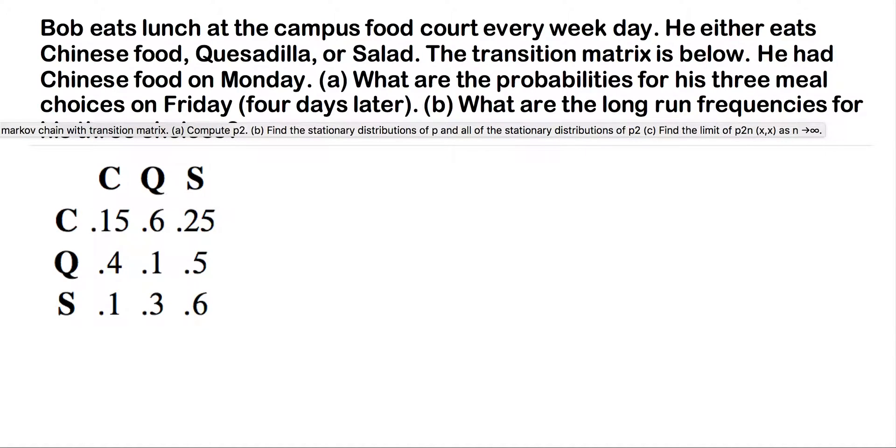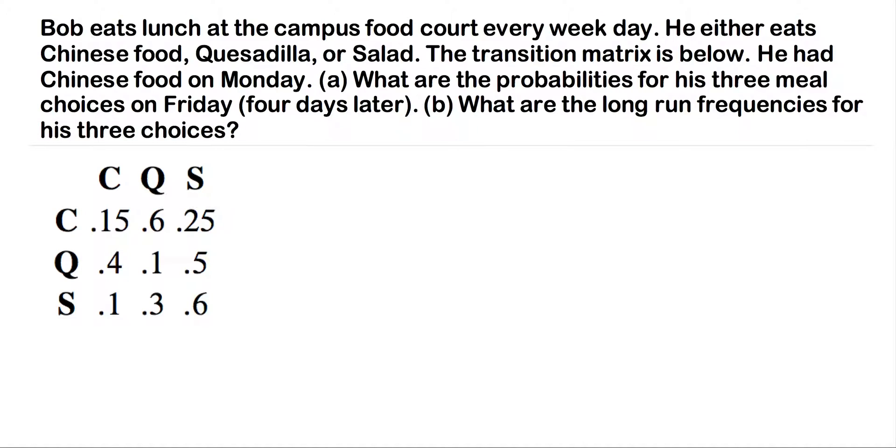Bob eats lunch at the campus food court every weekday. He either eats Chinese food, quesadilla, or salad. The transition matrix is below. He had Chinese food on Monday.